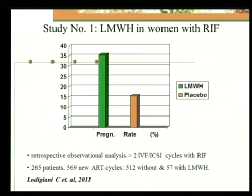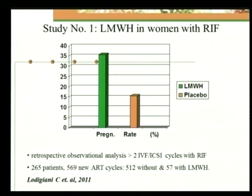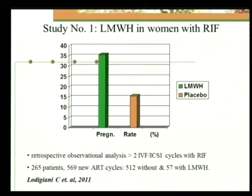The first study on LMWH use in recurrent implantation failure was conducted by Lodigiani et al. — a retrospective observational analysis of women who had undergone more than two IVF-ICSI cycles with recurrent implantation failure. They compared 265 patients across 569 new ART cycles: 512 women received placebo and 57 were treated with low molecular weight heparin. Looking at the bar graph, women given low molecular weight heparin showed pregnancy rates of 36% compared to 16% in women given placebo. Although this looks impressive, these results were not found to be statistically significant.